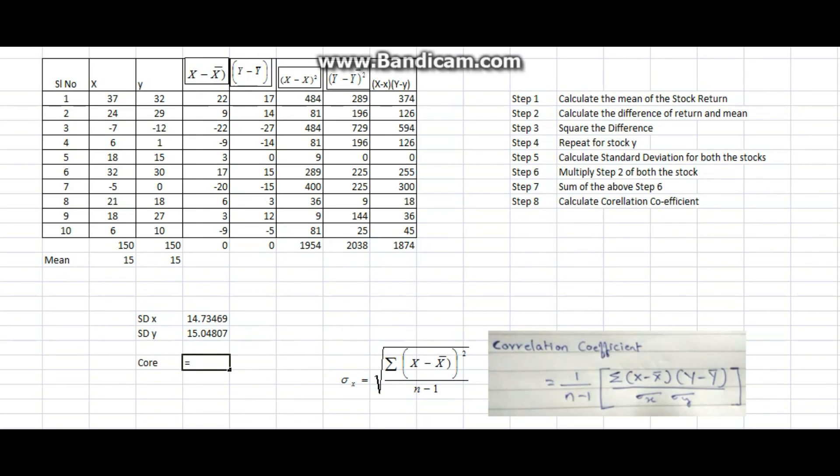For correlation coefficient, the formula is: first bracket 1 divided by 10 minus 1 bracket close, another bracket open. I get 0.93.